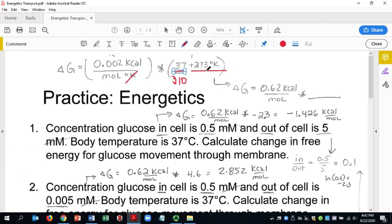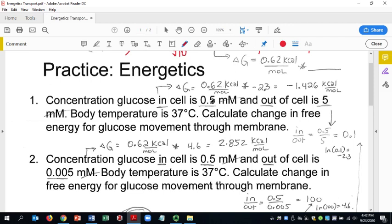The Kelvins will knock each other out, and so this becomes a really simple process where we just take 0.62 and multiply it by whatever our natural log is for our in-out concentrations. So let's practice.